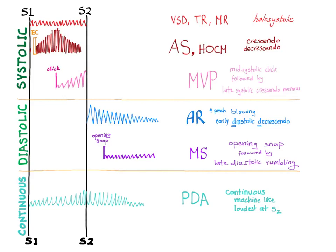Tricuspid regurgitation, mitral regurgitation. So they are heard at different areas but the sound is basically the same. Second, we have this crescendo-decrescendo murmur, and it occurs in aortic stenosis and hypertrophic obstructive cardiomyopathy.